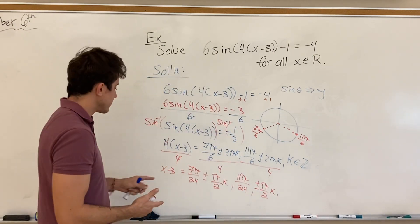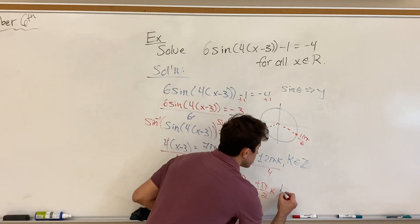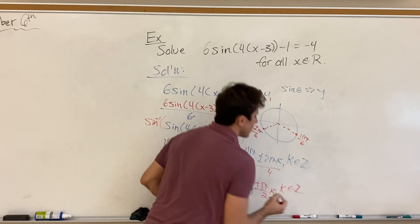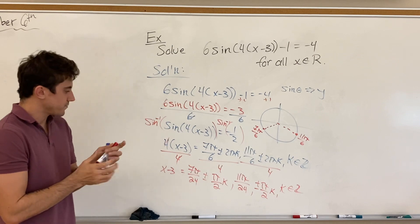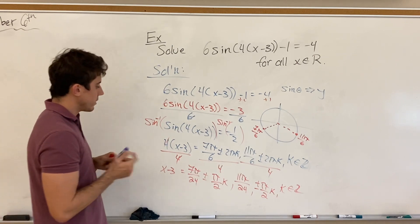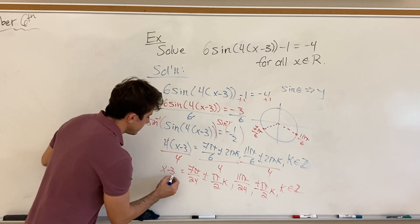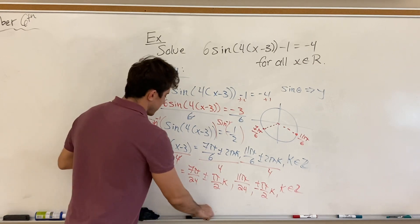And again, combining both instances for our general solutions, k can be any element of the set of integers. And now finally, we can go ahead and add the 3 to finish things off.